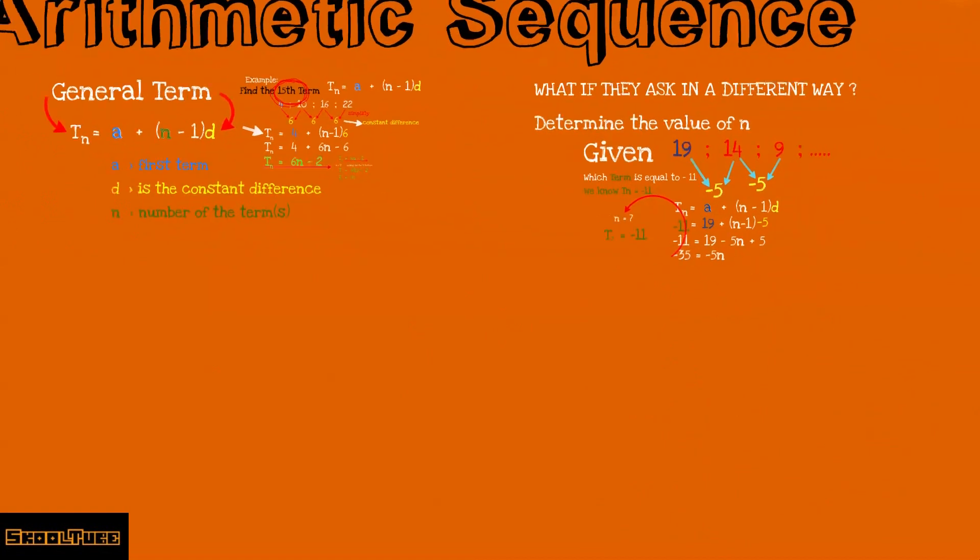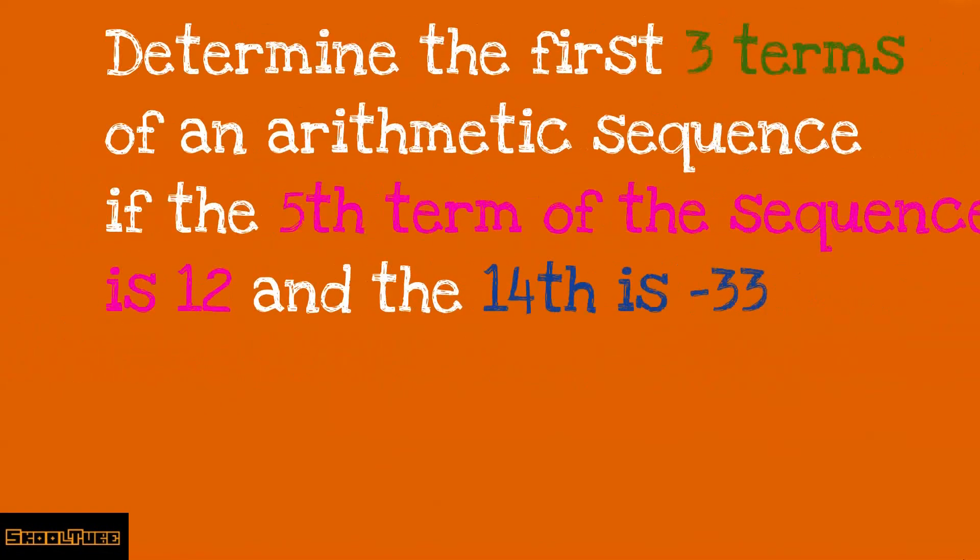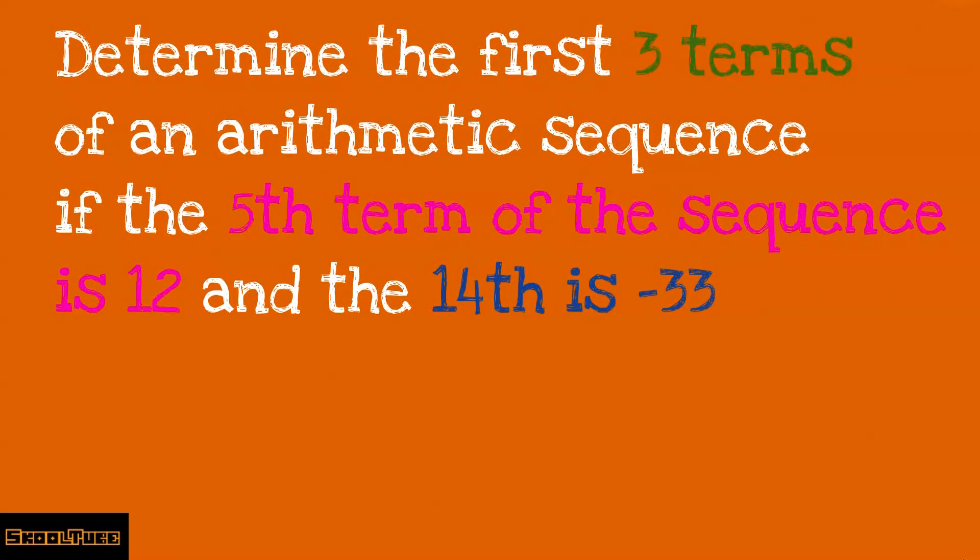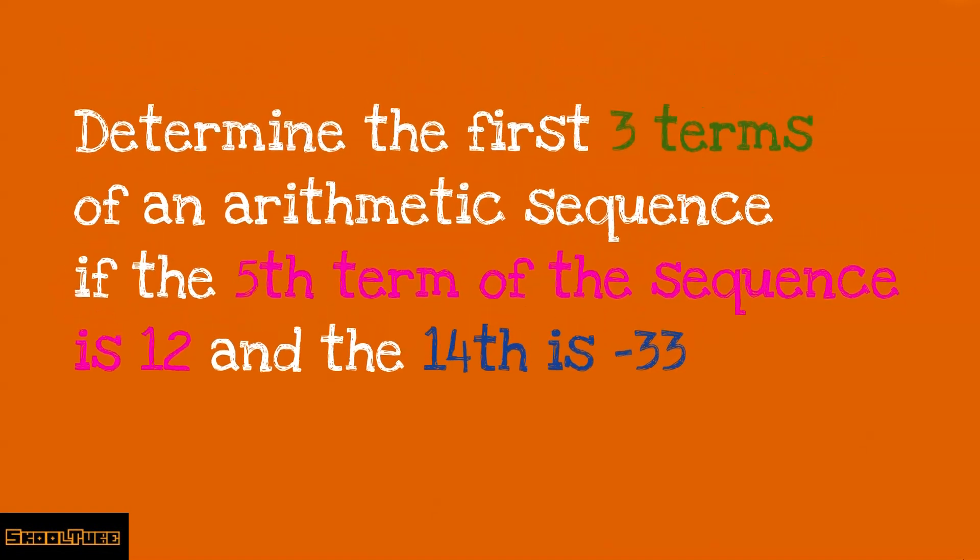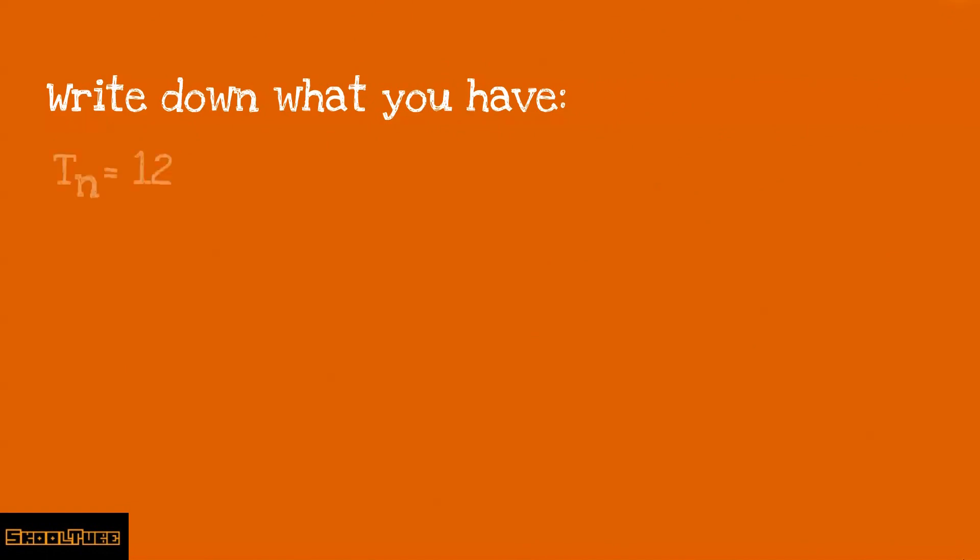But that's not all. What if they give you two terms? Determine the first three terms of an arithmetic sequence if the fifth term is 12 and the 14th is minus 33. Don't panic. Relax. And just write down what you have. You know that Tn equals 12 and Tn also equals minus 33. Furthermore, you know that Tn equals a plus (n minus 1)d for an arithmetic sequence.